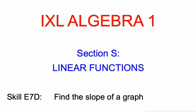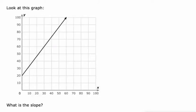Hello, Mr. Kaczynski with you. This is section S, skill 3 of IXL's Algebra 1, and today we're going to find the slope of a graph. Slope is the rate at which a graph goes up or down. It's a constant rate for slope.